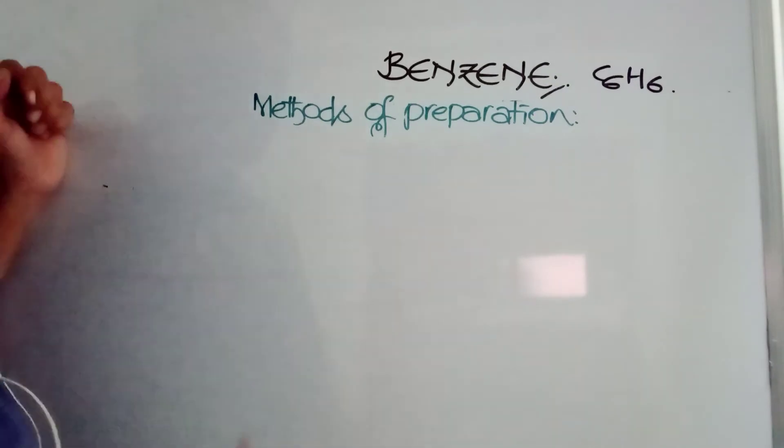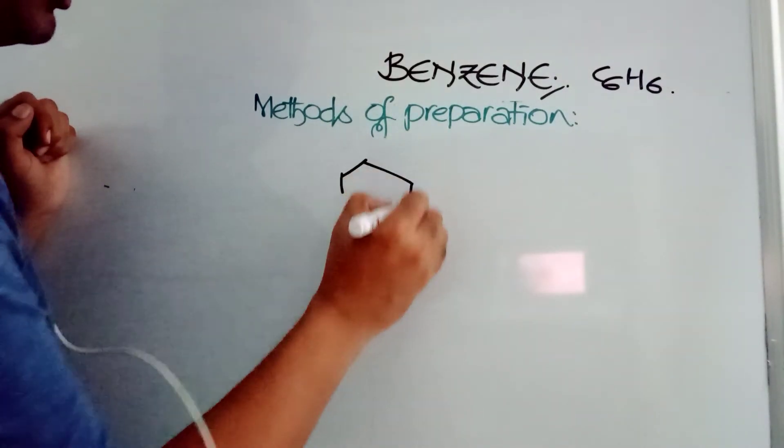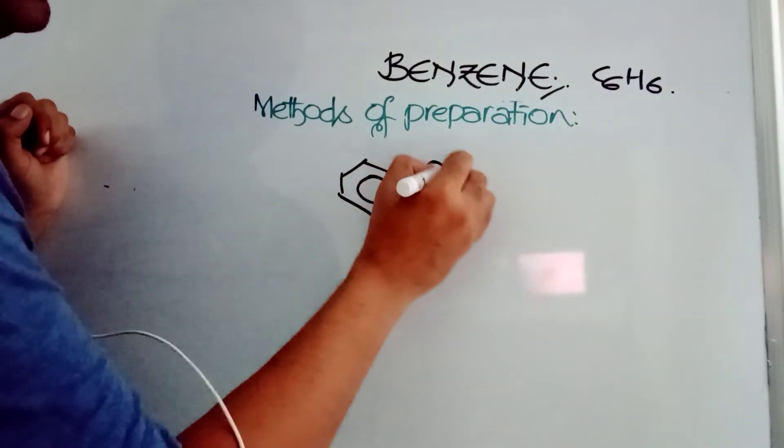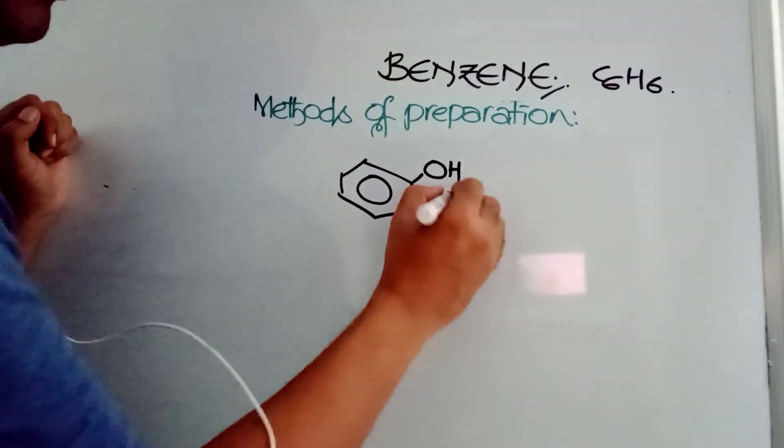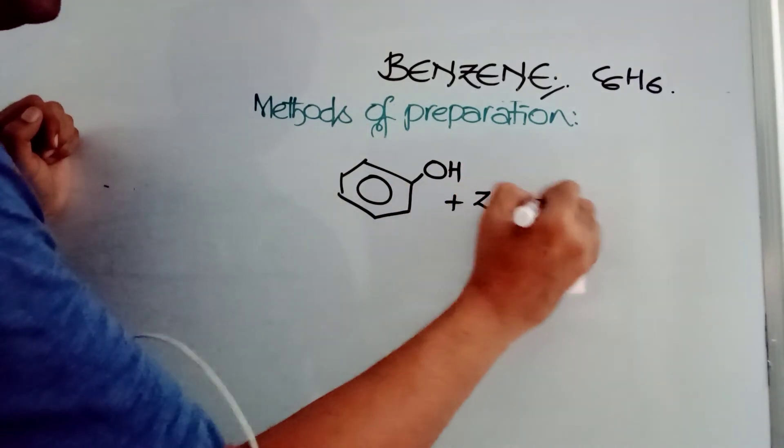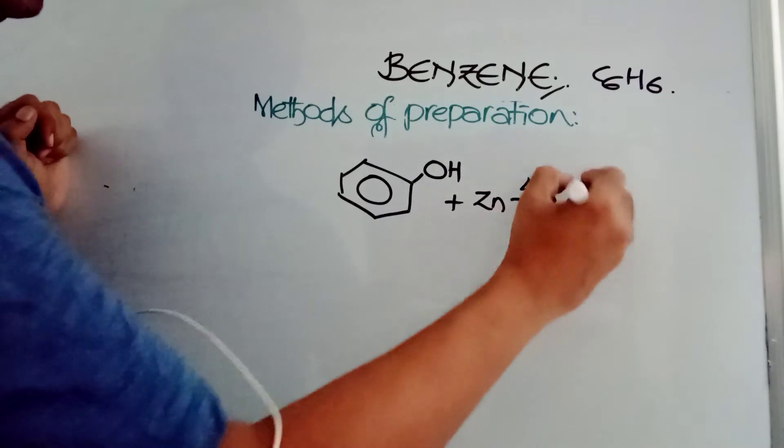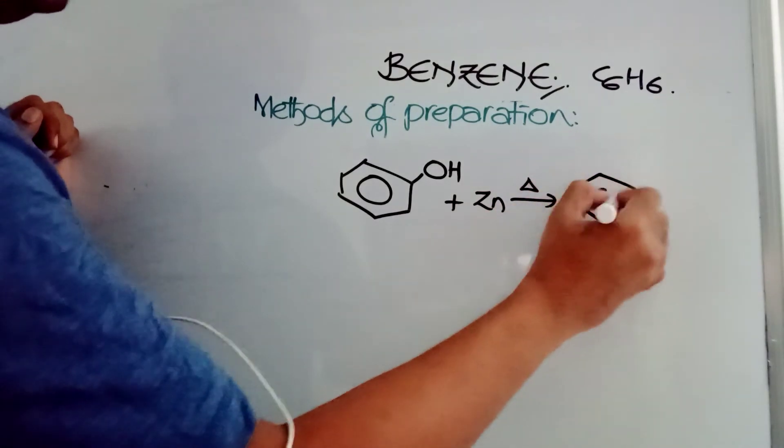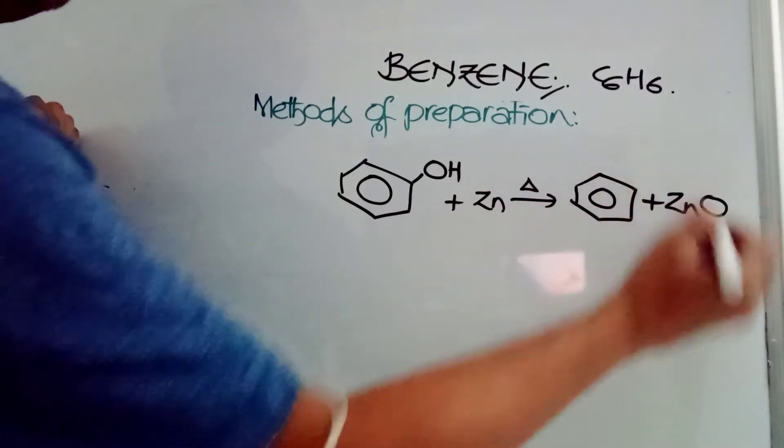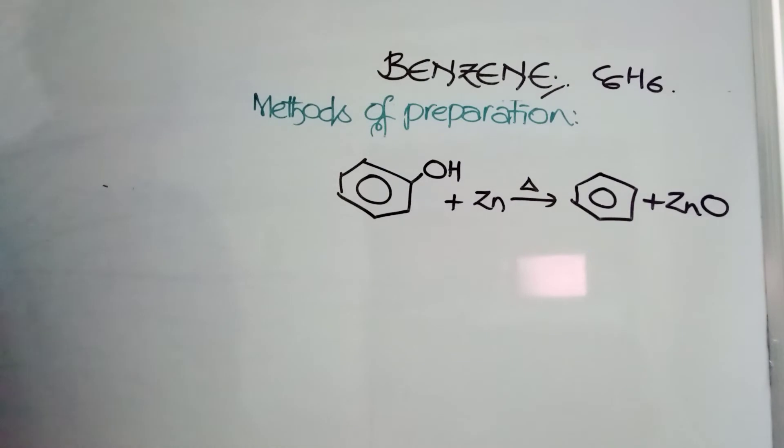You can prepare benzene from phenol. Phenol is like this. When treated with zinc dust, it gets reduced to benzene. Zinc oxide is formed. So by reduction of phenol with zinc, you can get benzene.